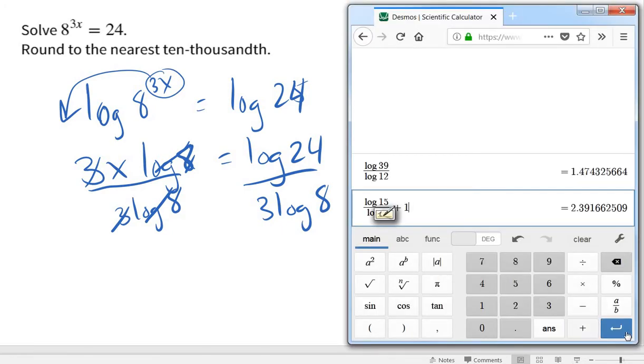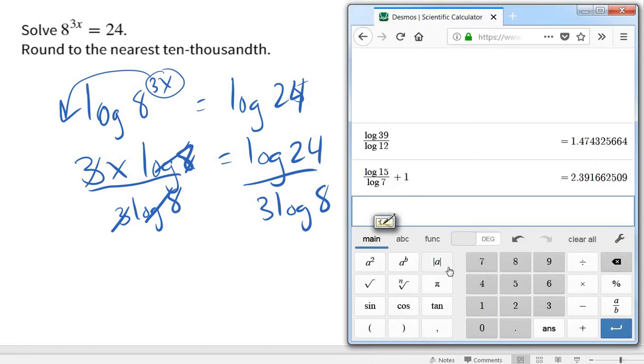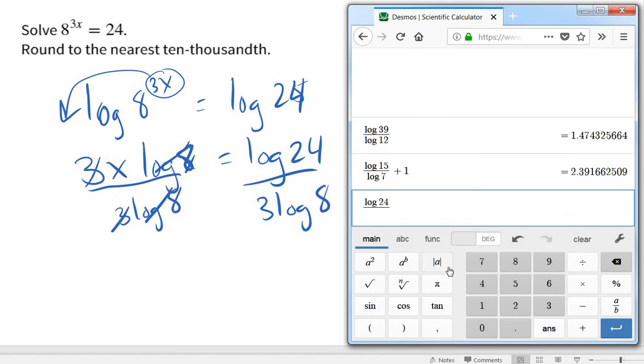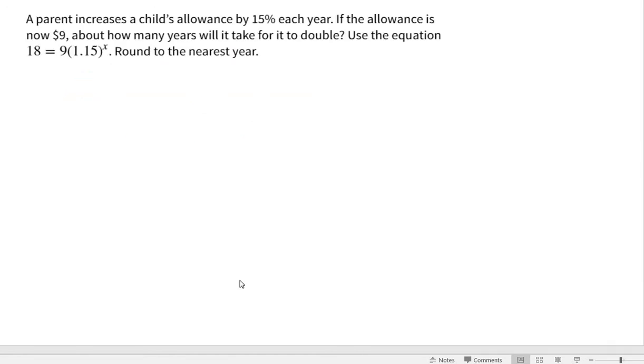So let's go bring that back up. All right, so I've got log 24 divided by 3 log 8. Look how easy I can type that in. Getting ground to like four decimals, 0.5094 looks like. Okay, one more. Let's look at it.